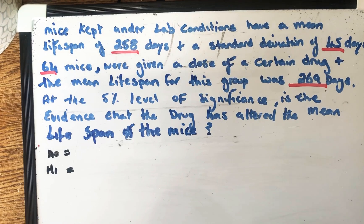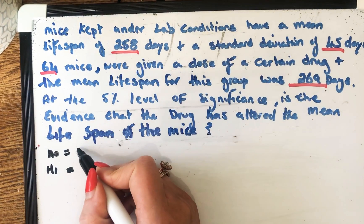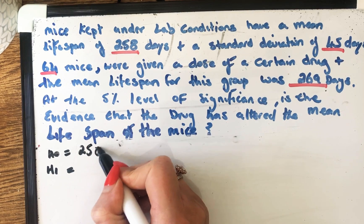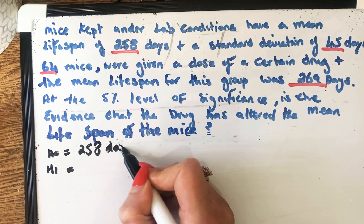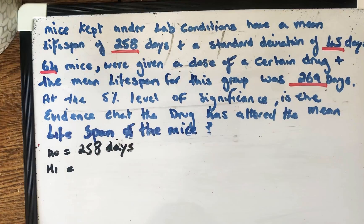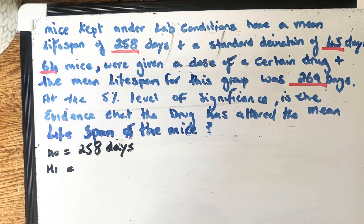And we can see it's 258 days from up here. So let's write down 258 days. Well, the alternative is the complete opposite of this. In other words, it's not 258 days. It's a different number of days. But of course, we don't know what that different number of days will be. It may not be 269. It could be a different number.